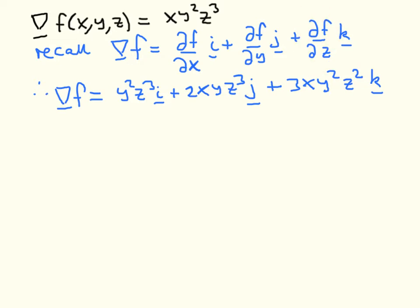Here is our field. It's straightforward to differentiate it. The derivative with respect to X: this is X to the 1 multiplied by the rest, which is treated as a constant in partial differentiation, so we are left with Y squared Z cubed. Similarly, when we differentiate with respect to Y, we pull down a factor of 2, reduce the power by 1, and the other factors are treated as constants, giving 2XYZ cubed.